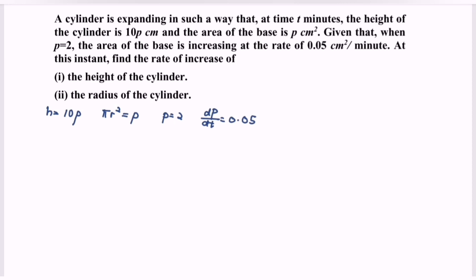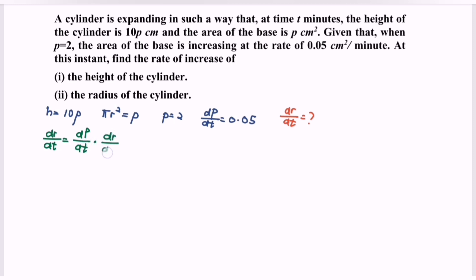At this instant, find the rate of increase of the radius of the cylinder. So now we are interested in the radius, meaning dr/dt is our focus. Draft the chain rule: dr/dt is equal to dp/dt multiplied with dr/dp. So we need to find dr/dp.